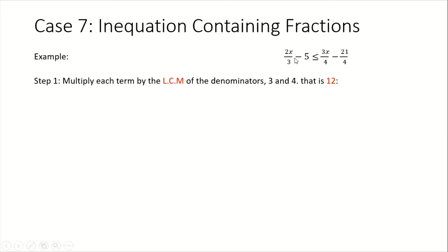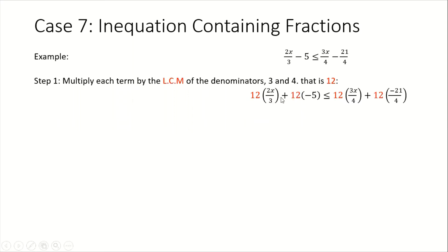We will take the lowest common multiple, which is 12, and multiply each individual term. In your book you would state it as: 12 times 2x over 3, plus 12 times negative 5, is less than or equal to 12 times 3x over 4, plus 12 times negative 21 over 4.